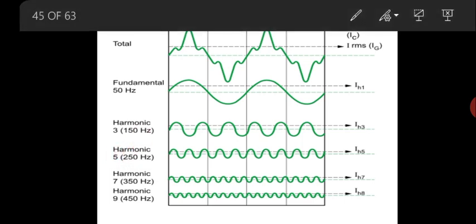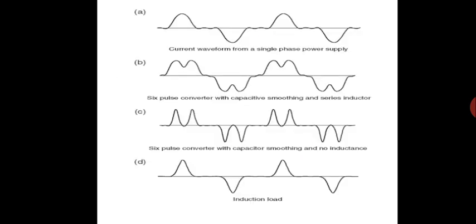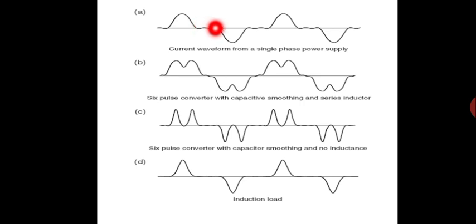If it is seven times, it is 350 Hz; nine times, it is 450 Hz. This is the distorted waveform which we see in a single phase circuit, due to the third, fifth, seventh, and ninth harmonics. Now we see the effects on a single phase power supply current waveform. You can see there is small distortion occurring in the positive and negative side, and the same distortions occur for three phase as well.